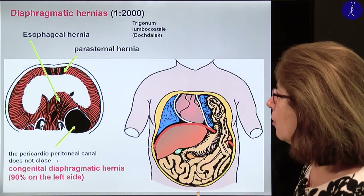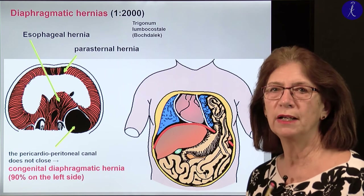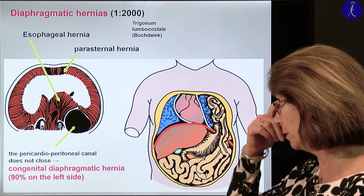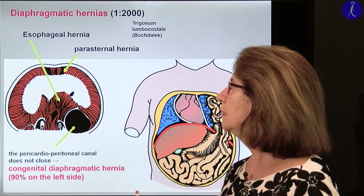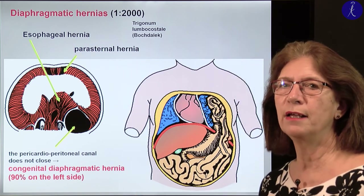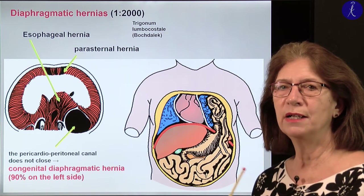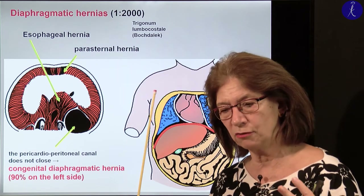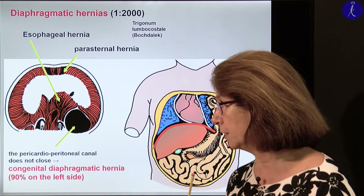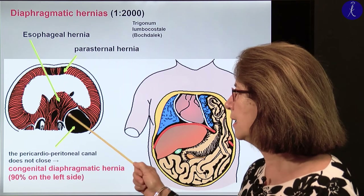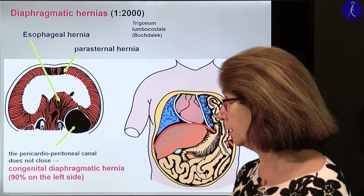If a complicated system like this has to form, we will sometimes have problems. We may have esophageal hernias, which can happen at those territories where any structure has to pass through the diaphragm or where special plates have to fuse with each other.